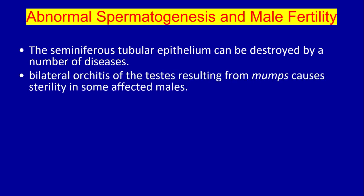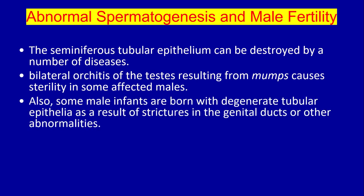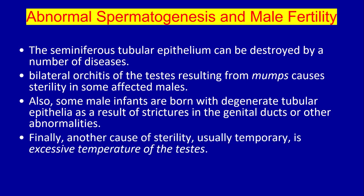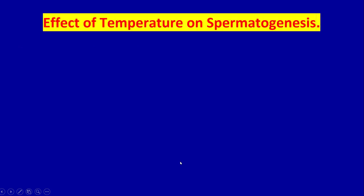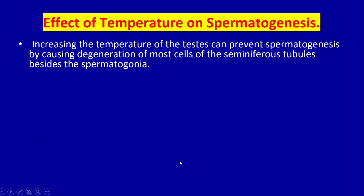Regarding abnormal spermatogenesis and male infertility: the seminiferous tubule epithelium can be destroyed by a number of diseases. Bilateral orchitis of the testes resulting from mumps causes sterility in some affected males. Some male infants are also born with degenerated tubular epithelia as a result of strictures in the genital duct or other abnormalities.